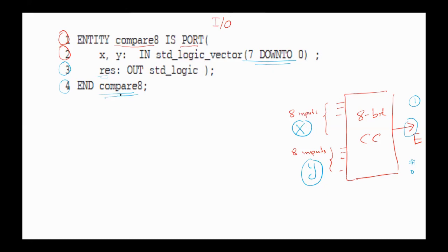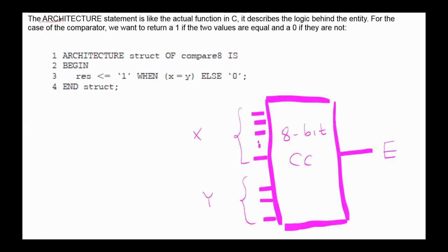This is important since we may have several entities in the program. The second entity is the ARCHITECTURE entity. The ARCHITECTURE statement is like the actual function in C. It describes the logic behind the entity.